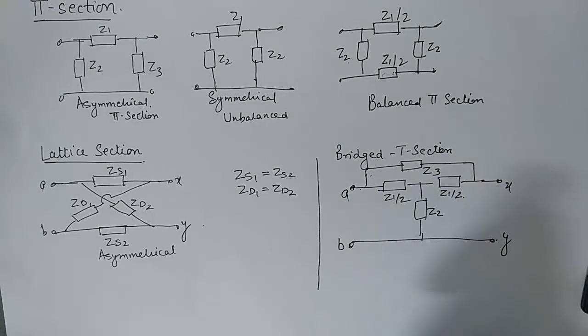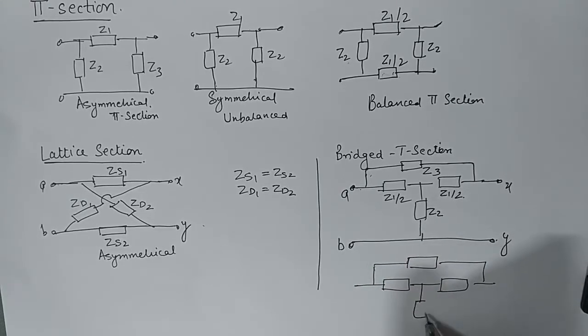And if we wish to make this as a balanced T-section then what we do is we put up some additional impedance here and average impedance here.